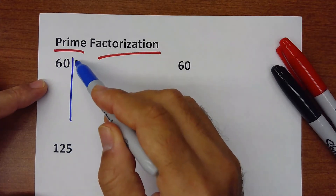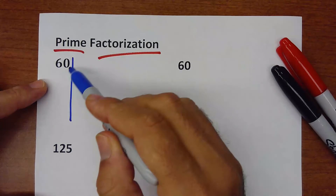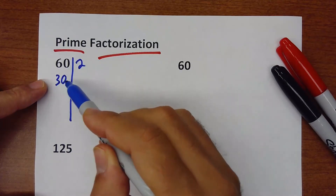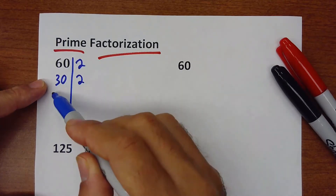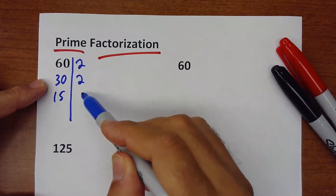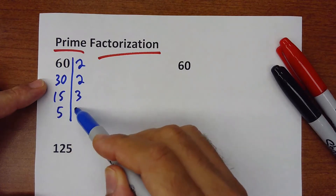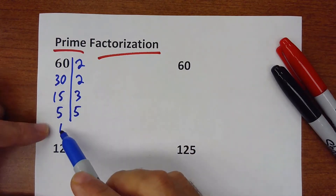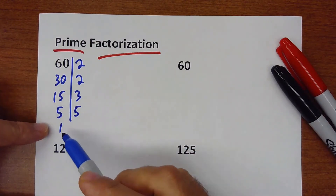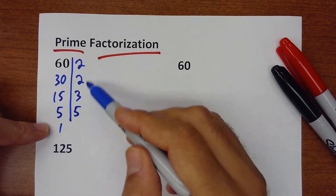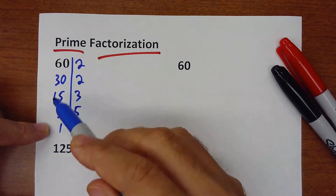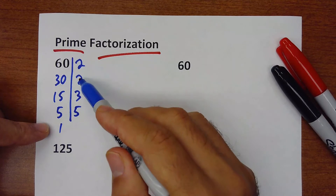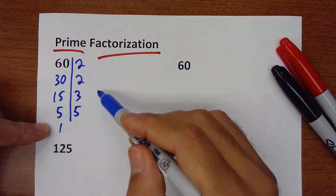There is one method: divided by 2, it will be 30. Divided by 2 is 15. Divided by 3 is 5. Divided by 5 is 1. Once you hit the 1, you're done. The prime factors for 60 are 2, 2, 3, and 5.